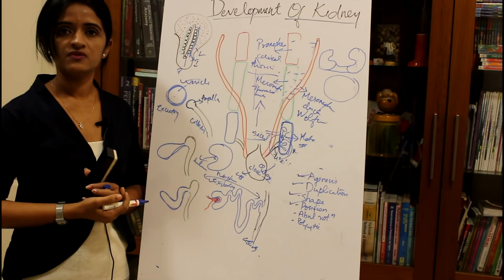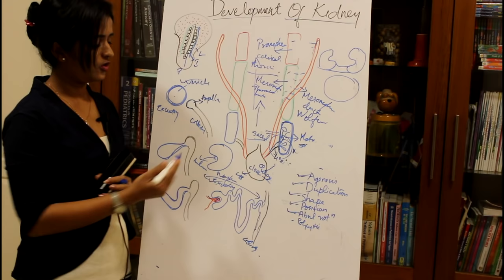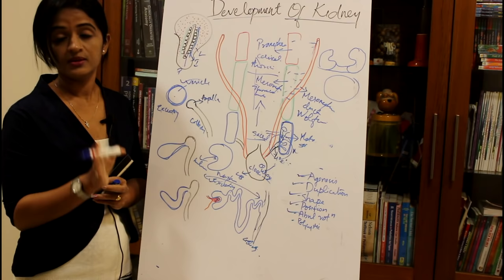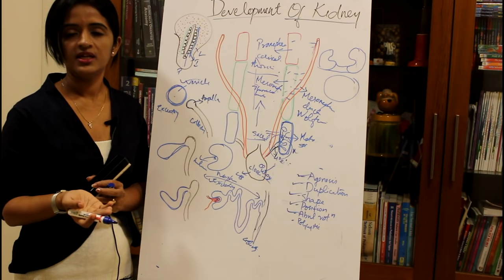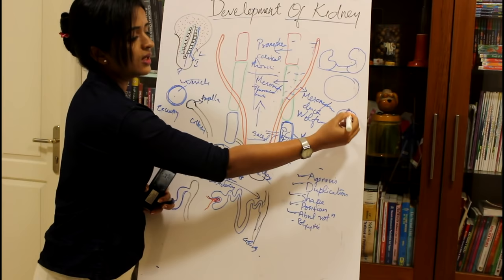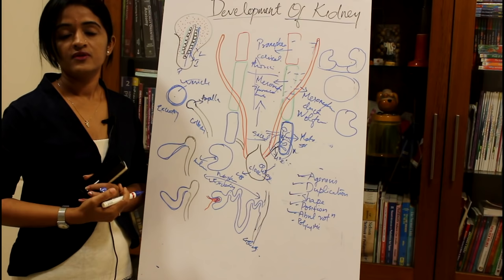Abnormal rotation of the kidney: the hilum normally faces anteriorly at first and then rotates medially. Sometimes this rotation does not occur and the hilum persists facing anteriorly in the adult kidney. Sometimes instead of rotating medially, it may rotate laterally, so the hilum ends up facing laterally.